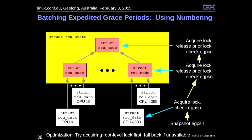One optimization: if expedited grace periods aren't happening very often — which is the common case — you'd be climbing the tree for no good reason when nobody else is there. So one thing you could do is check if the lock at the very top is free, try to acquire it, and if you get it, do your grace period and get out. That eliminates the extra latency of climbing the tree under low traffic.